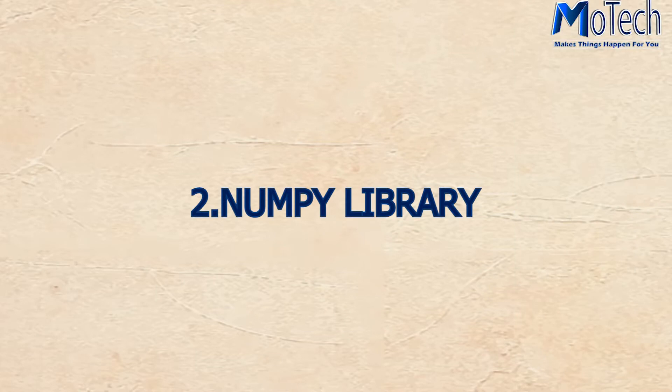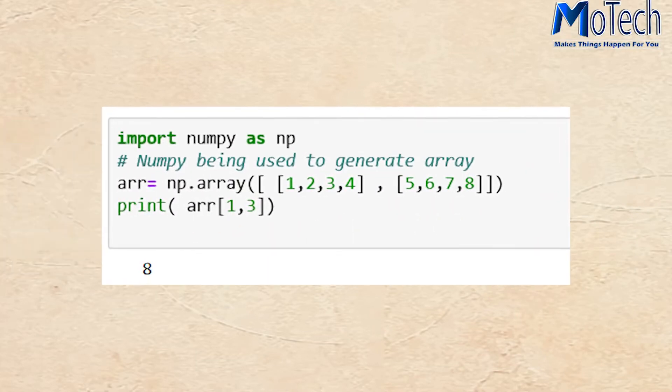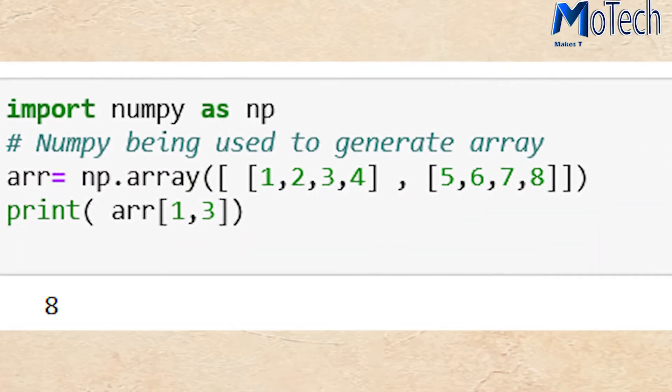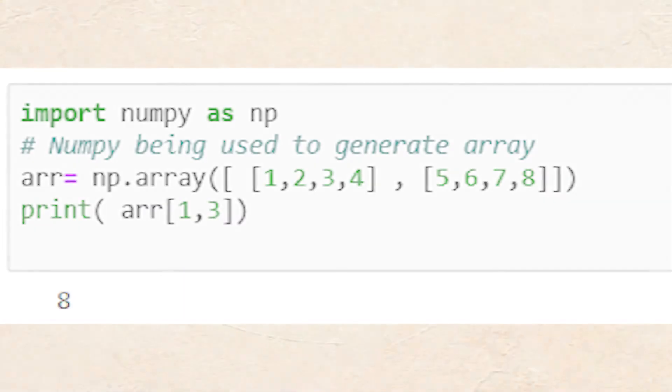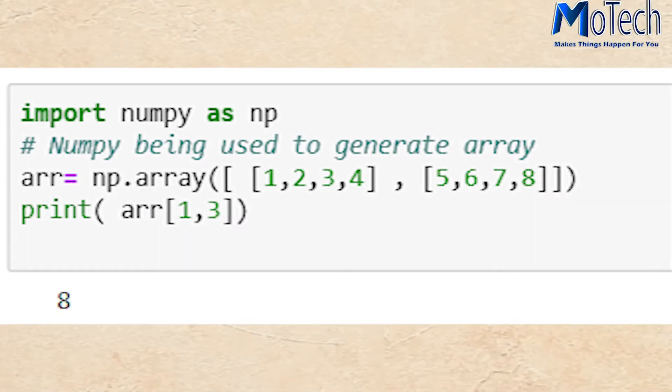Number two: NumPy. This is a library which deals with different numbers like matrices and arrays. It will help you to generate different numbers, different arrays, and different matrices.